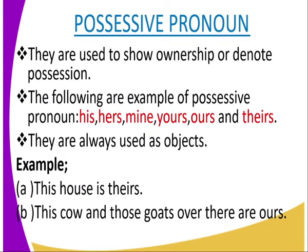Looking at possessive pronouns: they are used to show ownership or denote possession. Words used as possessive pronouns include: his, mine, yours, ours, and theirs. They can also be used as subjects or objects. For example: 'the house is theirs' — here 'the house' is the subject and 'theirs' denotes possession.